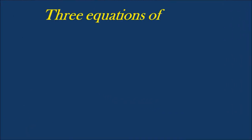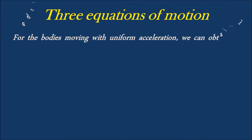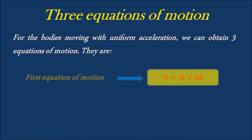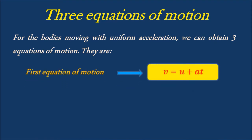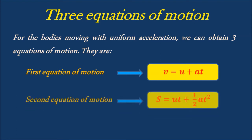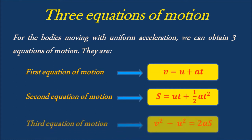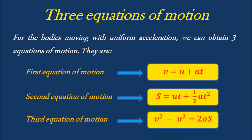Now, let's talk about three equations of motion. For the bodies moving with uniform acceleration, we can obtain three equations of motion. They are: V is equal to U plus A into T, called the first equation of motion; S is equal to UT plus half A into T square, called the second equation of motion; V square minus U square is equal to 2AS, called the third equation of motion.